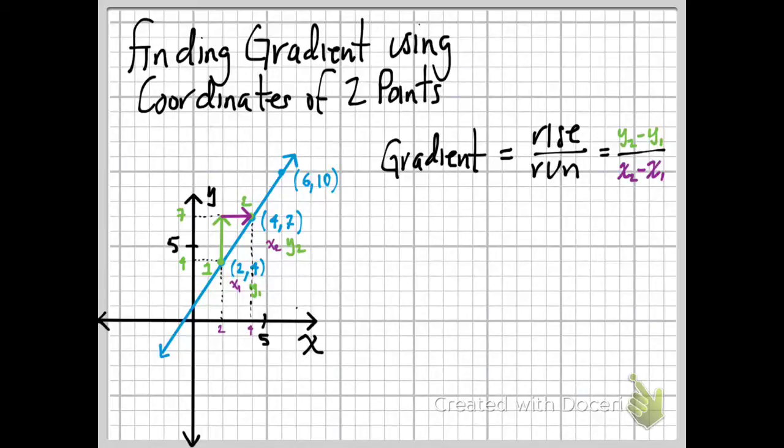So for our little example here, for this line, we're going to plug in the y-coordinates, y2 minus y1. Which is 7 minus 4, right? Y2 minus y1. And then we're going to plug in x2 minus x1. So x from the second one, subtract x from the first one.